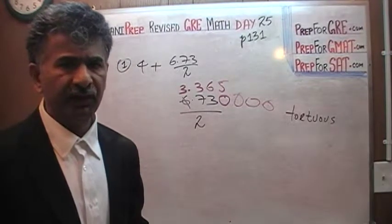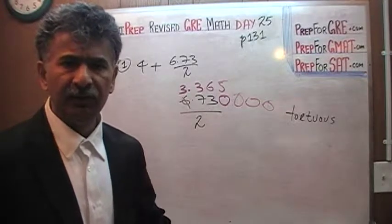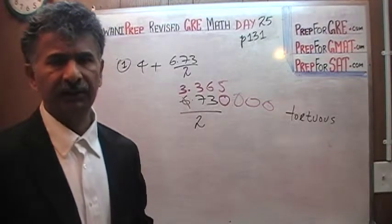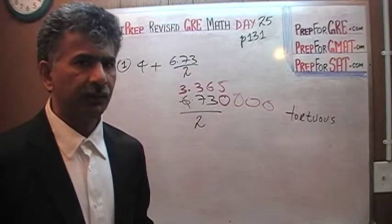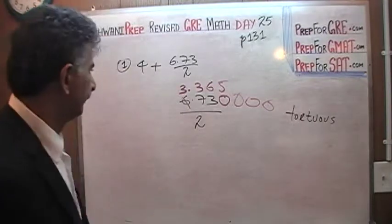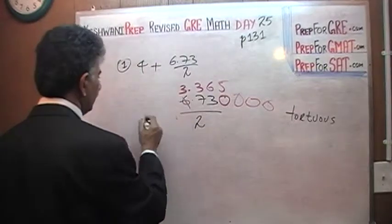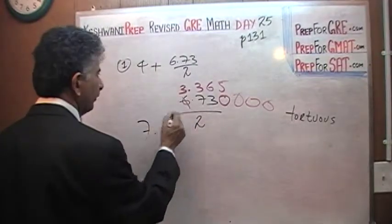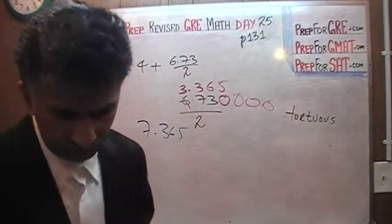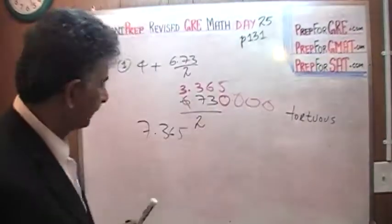Sometimes you make a mistake with the calculator and it's not going to tell you. If you do it by hand, you'll be more conscious of what you're doing. So the final answer is 4 plus 3.365 — so 7.365, whatever it was — that's it.